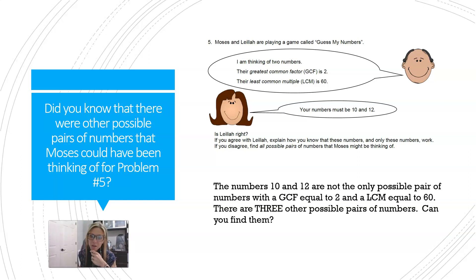Does he have to be thinking of 10 and 12? Are there two other numbers that could work? It said, if you disagree, find all possible pairs he might be thinking of. Here's my little tidbit of information for you: there are other pairs.